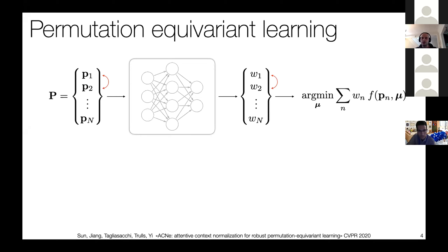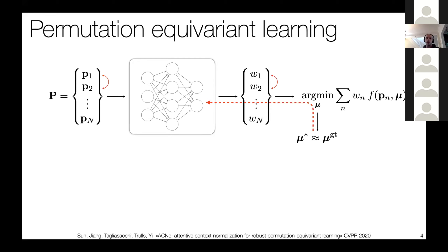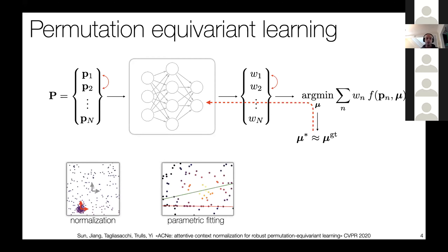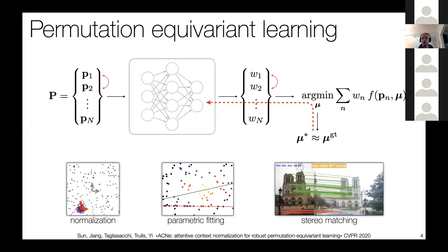If you have a solution for quantity mu that the optimization problem should produce, you can supervise it with respect to ground truth measurements and backpropagate through the entire architecture. For permutation equivariant learning, we care about a network that generates a new quantity attached to a particular entry in set P. This structure applies to feature normalization, parametric fitting of geometric models like lines and planes, and most importantly, stereo matching — where you determine weights Wn to compute camera calibration for extrinsic parameters corresponding to different views between two images.